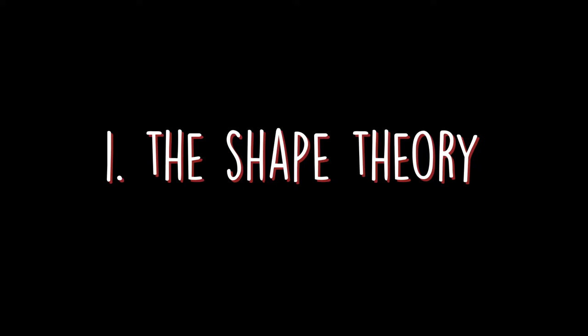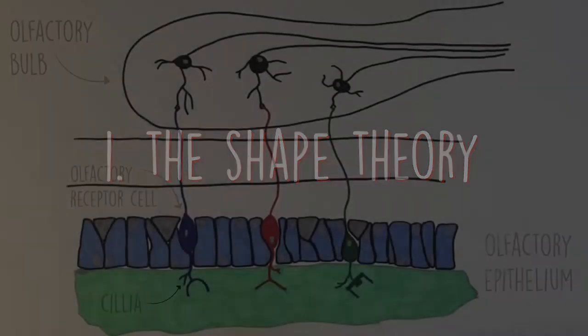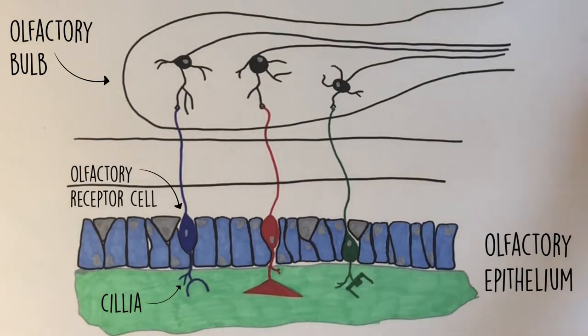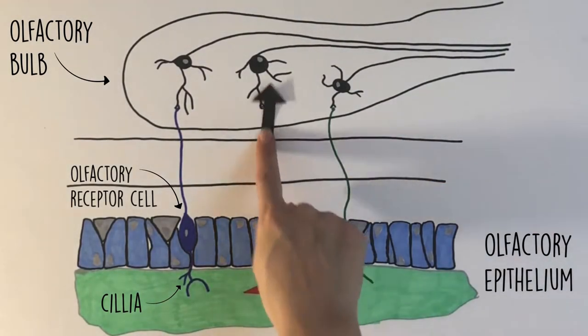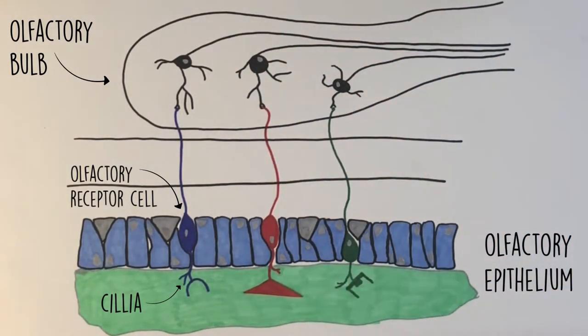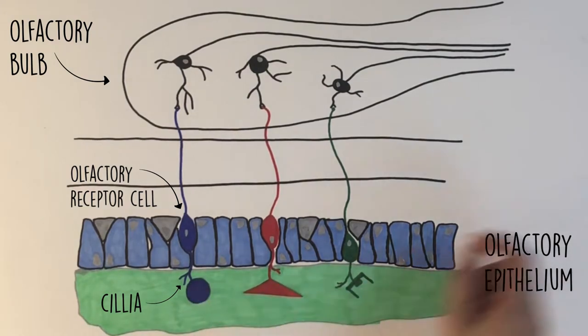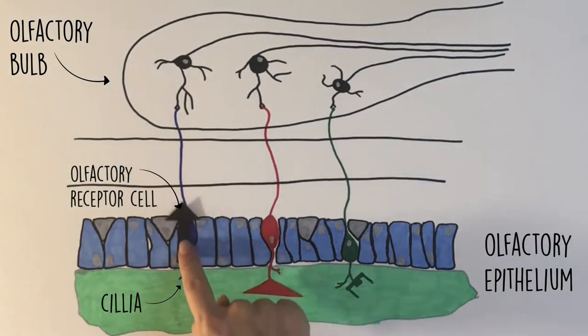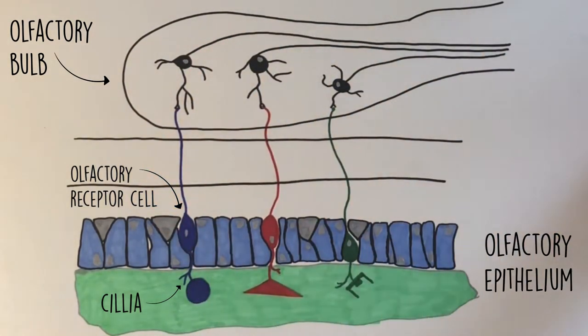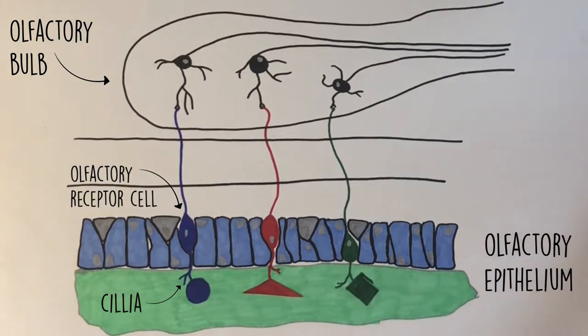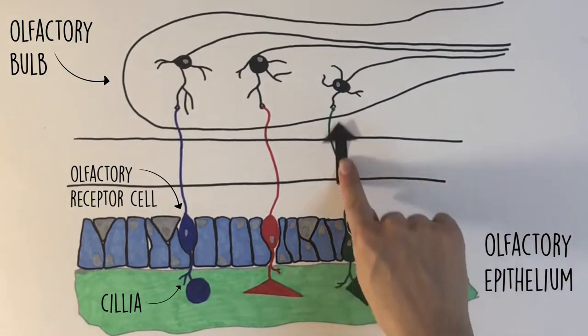There are two main theories of how the sense of olfaction works. The first is the shape theory, where a molecule's specific shape is thought to be complementary to olfactory receptors, allowing it to bind like a lock and key, where various weak bond interactions cause a conformational change of the receptor that triggers a signal to be sent to the brain.